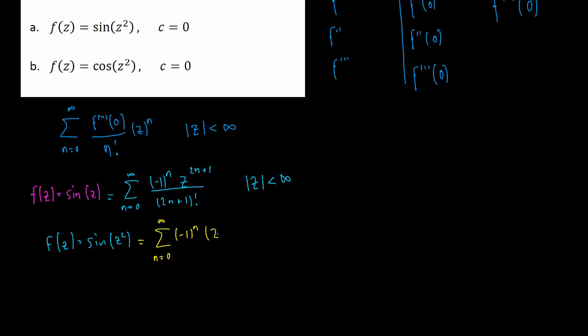Z, however, does, so I've got to replace that with a z squared to the 2n plus 1, on 2n plus 1 factorial, and that is valid for mod z is less than infinity.